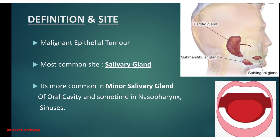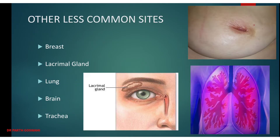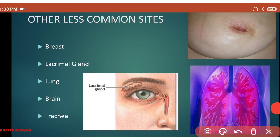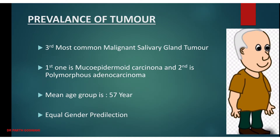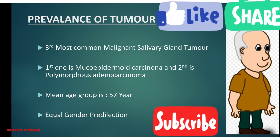Adenoid cystic carcinoma can occur in other less common sites as well. It can be seen in the breast, lacrimal gland, and lung. Very rarely, this tumor can occur in the brain and trachea.